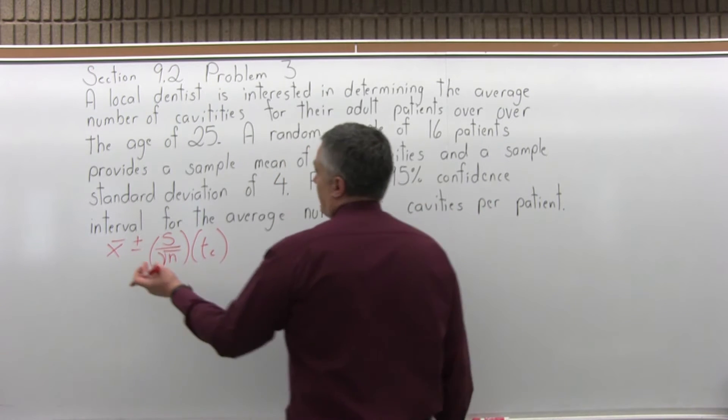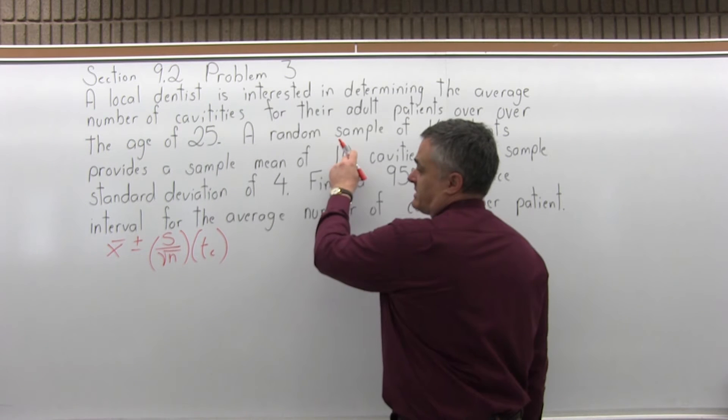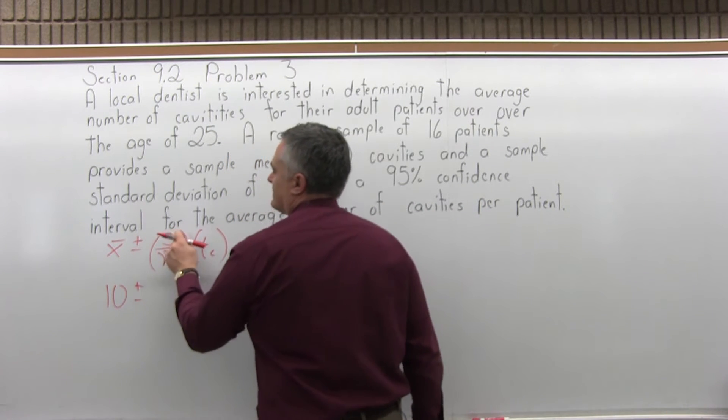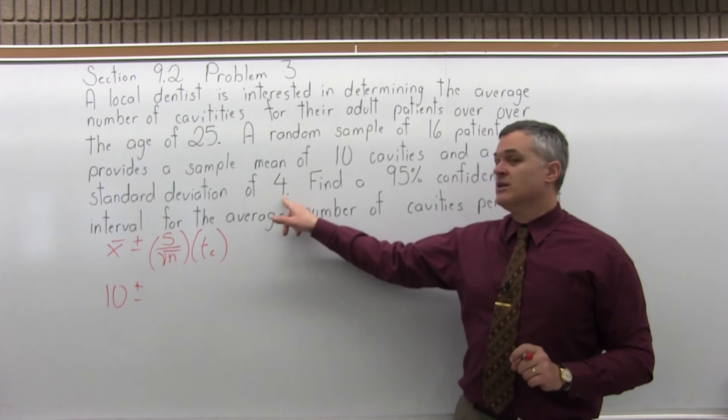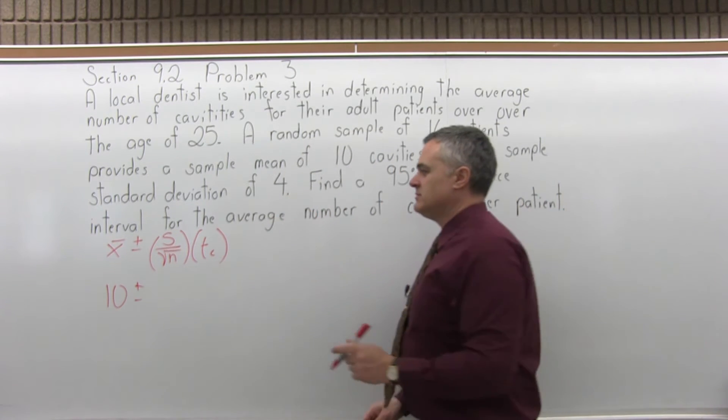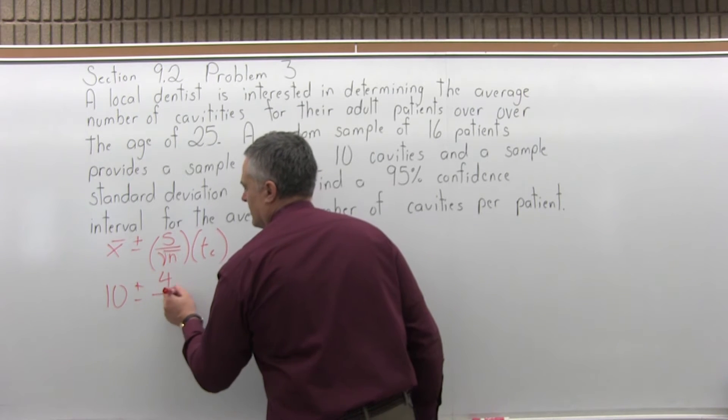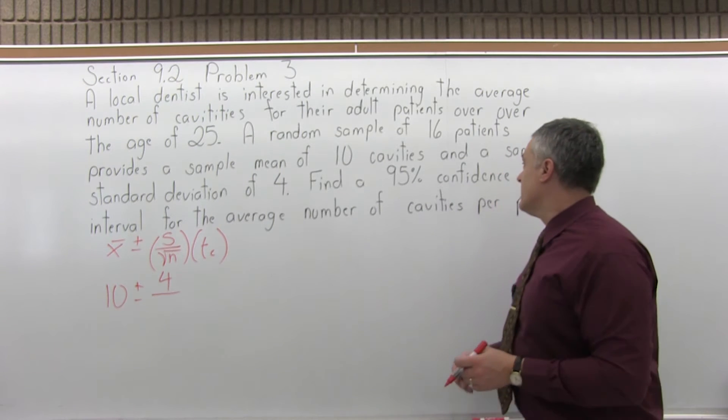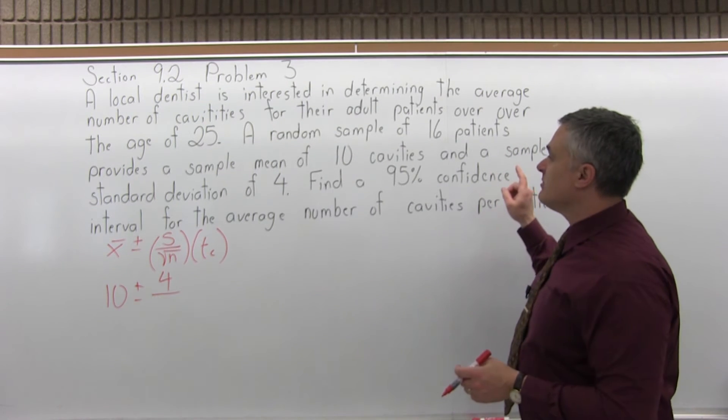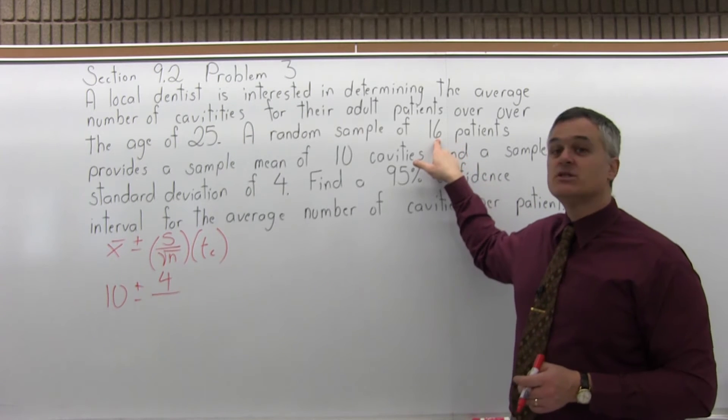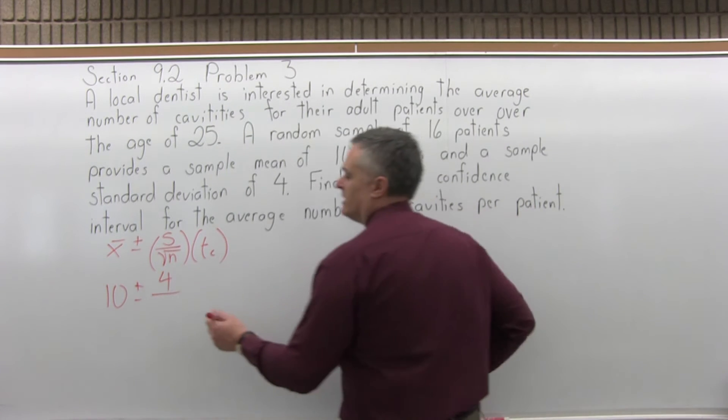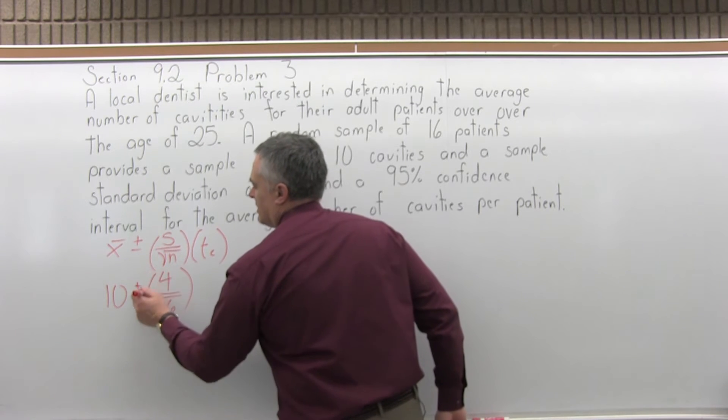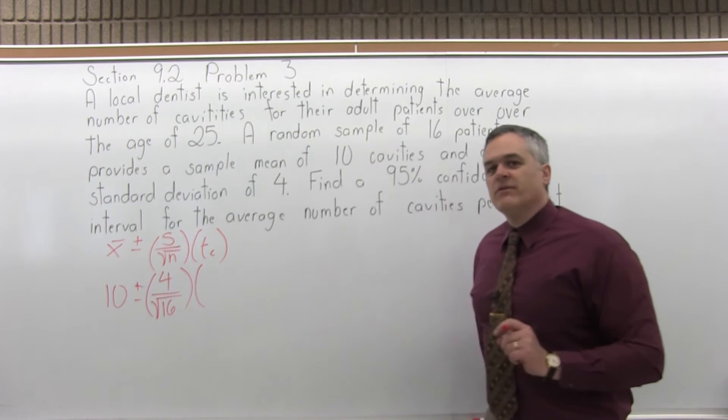So let's start filling this in. The x̄ is the average of the sample which the question tells us is 10, plus or minus s, the standard deviation of the sample which again the question tells us is 4, divided by square root of n. n is the size of the sample, and if you look it says that a sample of 16 patients. So 16 is the size of the sample. Don't forget it's under a square root, so it's square root of n becomes square root of 16. And now t sub c, the confidence coefficient.